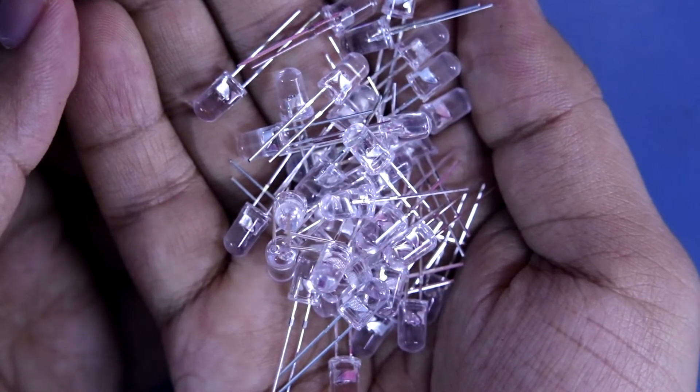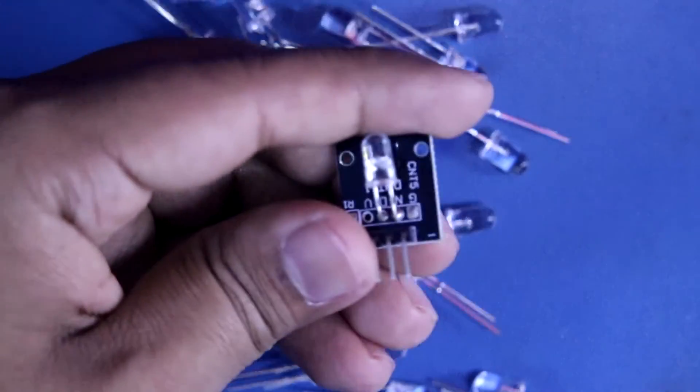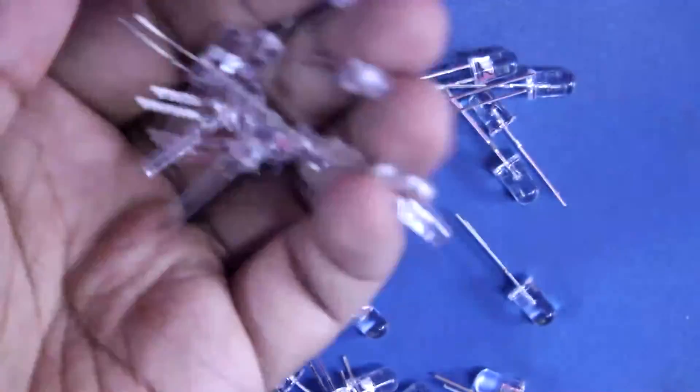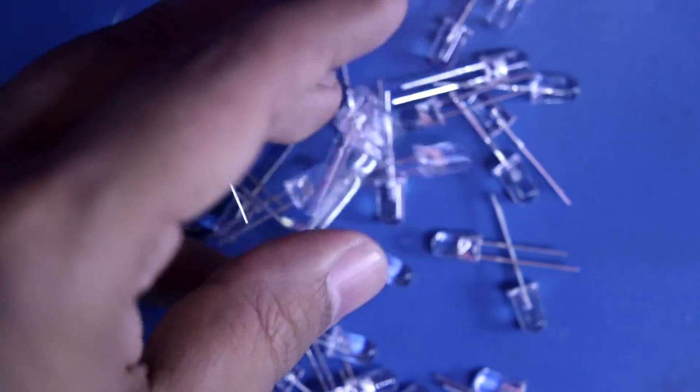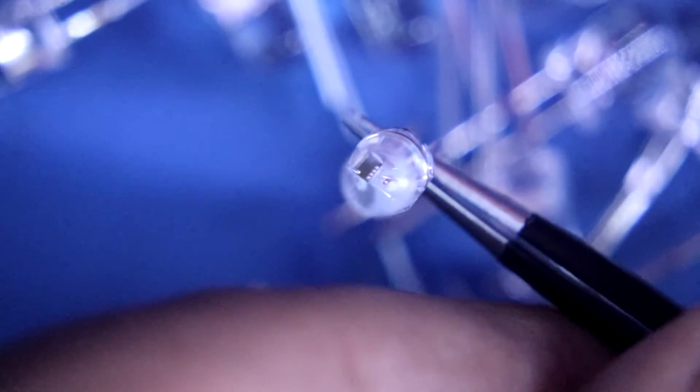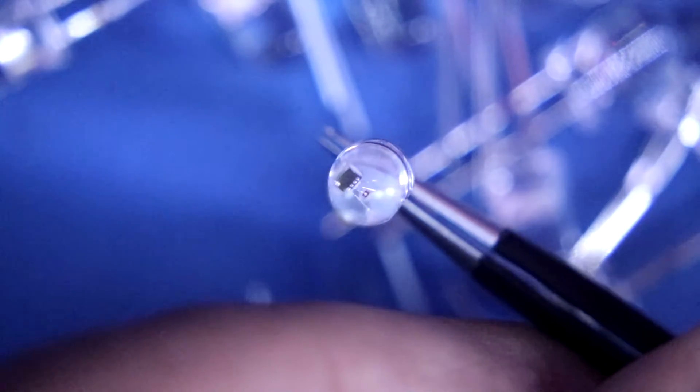If you need automatic flashing colors then you can buy these LEDs. Instead of this module you can get this LED in very low price. See this also has the IC and the three little LEDs inside this.